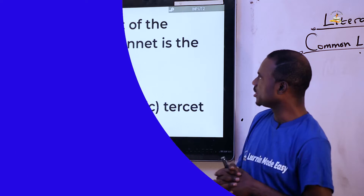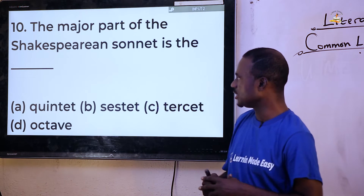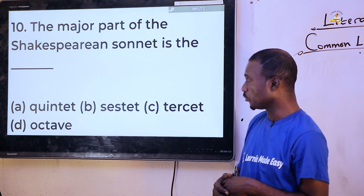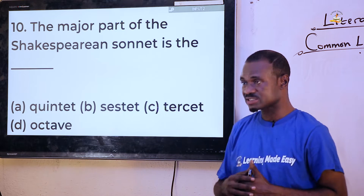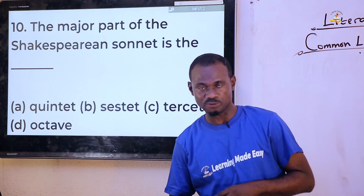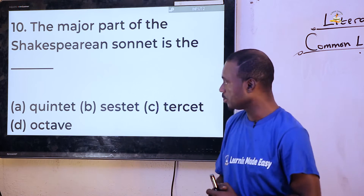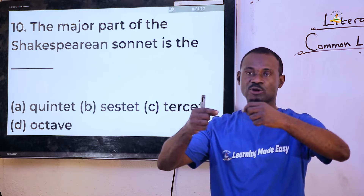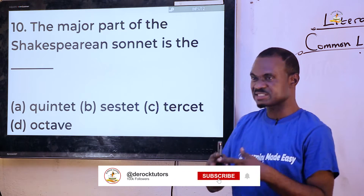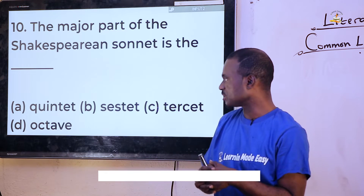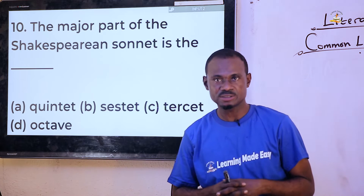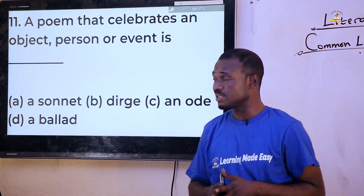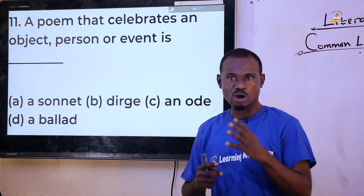Question nine: 'The major part of the Shakespearean sonnet is the dash.' You can't go for quintet, not tacit, not sextet. The answer is octave. A Shakespearean sonnet always has two parts: the first major part is the octave — the first eight lines — while the last part is the sestet, which is six lines, making 14 lines in total for the whole sonnet.